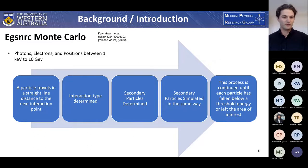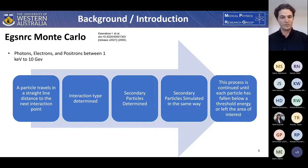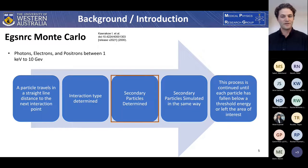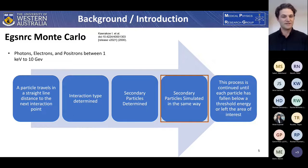Monte Carlo is used in medical physics to solve the particle transport equations using a stochastic method. The process begins with a particle traveling a random sampled distance to its next interaction point. At that point, the interaction type is determined based on the likelihood of each interaction in the medium. The energy loss or nature of secondary particles produced is determined based on another sampling event, and then secondary particles are simulated in the same way. This process continues until each particle falls below a threshold energy or leaves the area of interest.